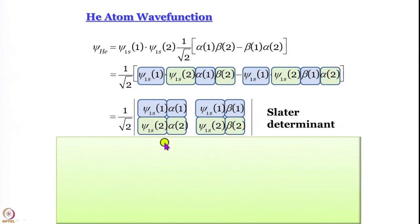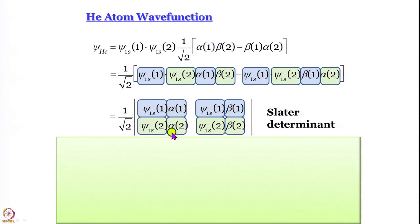Similarly, in the second row, going from the first column to the second one, the electron number remains 2, but from psi 1s 2 alpha 2, we go to psi 1s 2 beta 2. So on going from left to right in the determinant, the spin orbital changes and the electron label remains the same. And upon going from top to bottom, the spin orbital psi 1s alpha remains the same and what changes is the electron label, from 1 to 2.